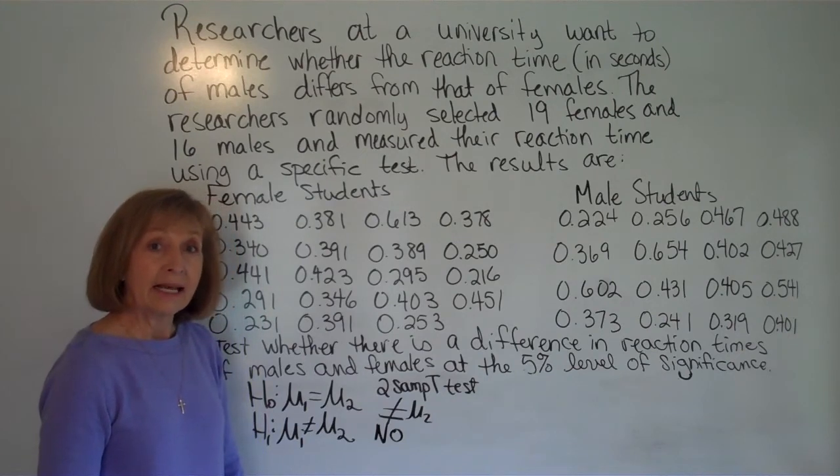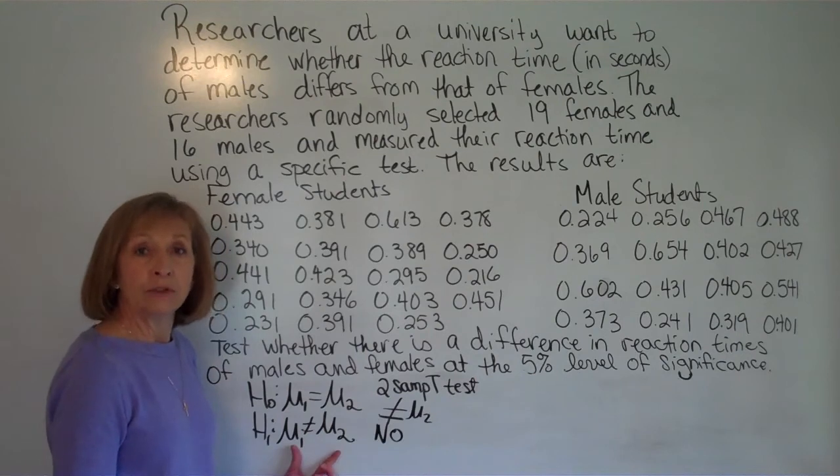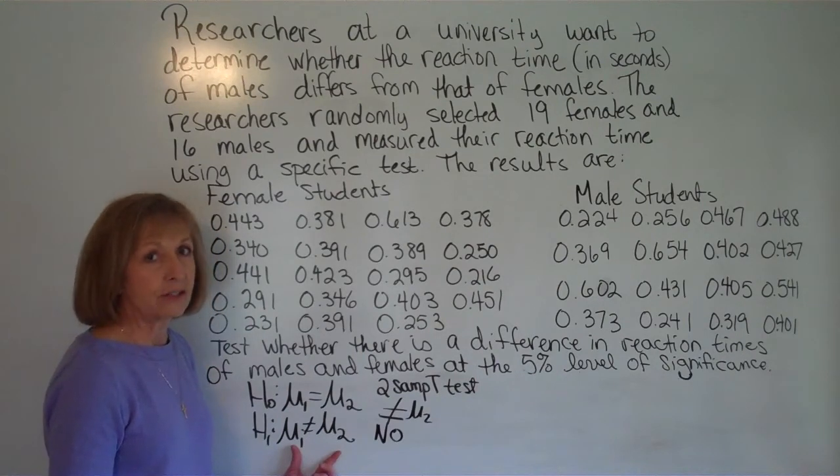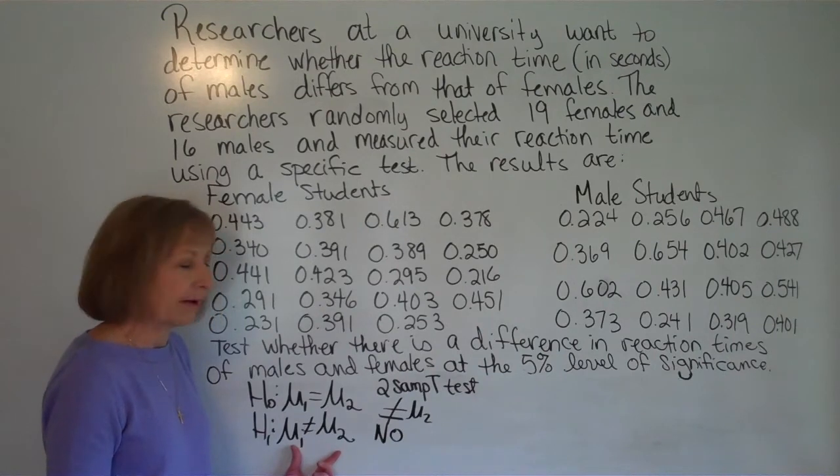Once you calculate it then it's going to give you a report. It's going to show you mu1 not equal to mu2 at the very top of the screen. And that's just to reiterate the alternate hypothesis so you can double check and make sure that you have it right.